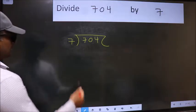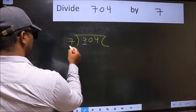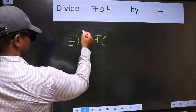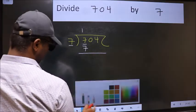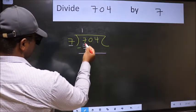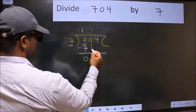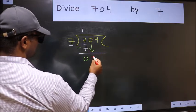Next. Here we have 7. Here also 7. When do we get 7 in 7 table? 7 once, 7. Now we should subtract. 7 minus 7, 0. After this, bring down the beside number. So 0 down.